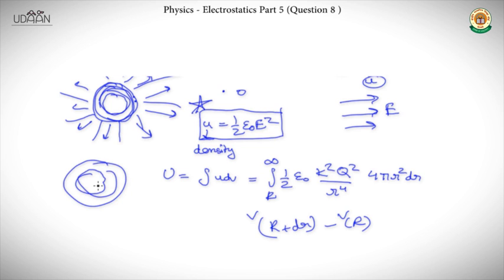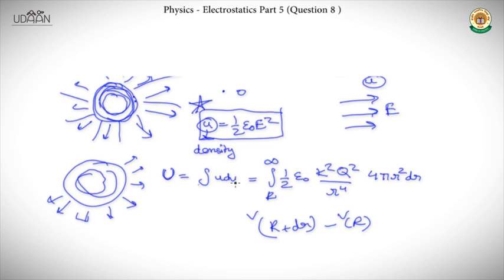Inside the sphere there was no electric field, so there won't be any energy associated with that space. Since there is electric field outside, there will be energy stored there. We simply add up all small u's: capital U equals the integration of small u times dV, where dV is a small volume element. For any body creating an electric field, energy is stored in the region of that field.